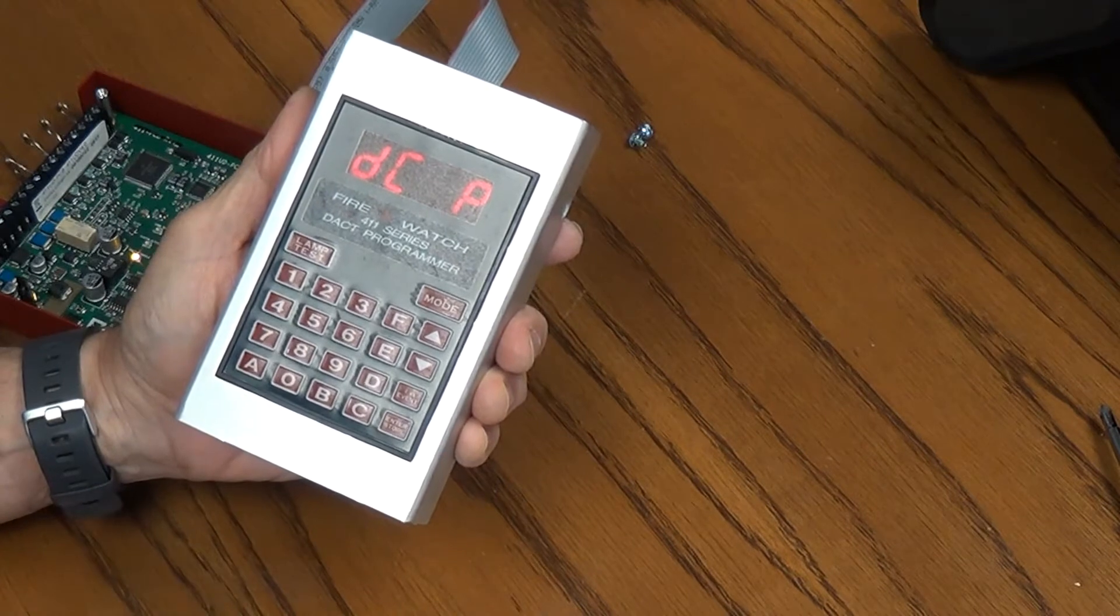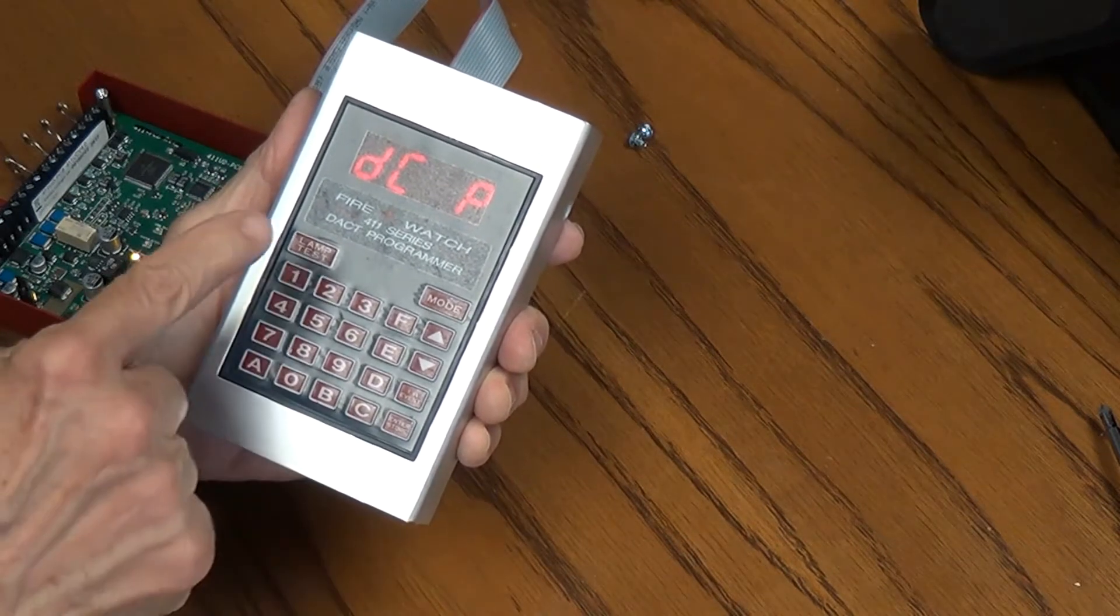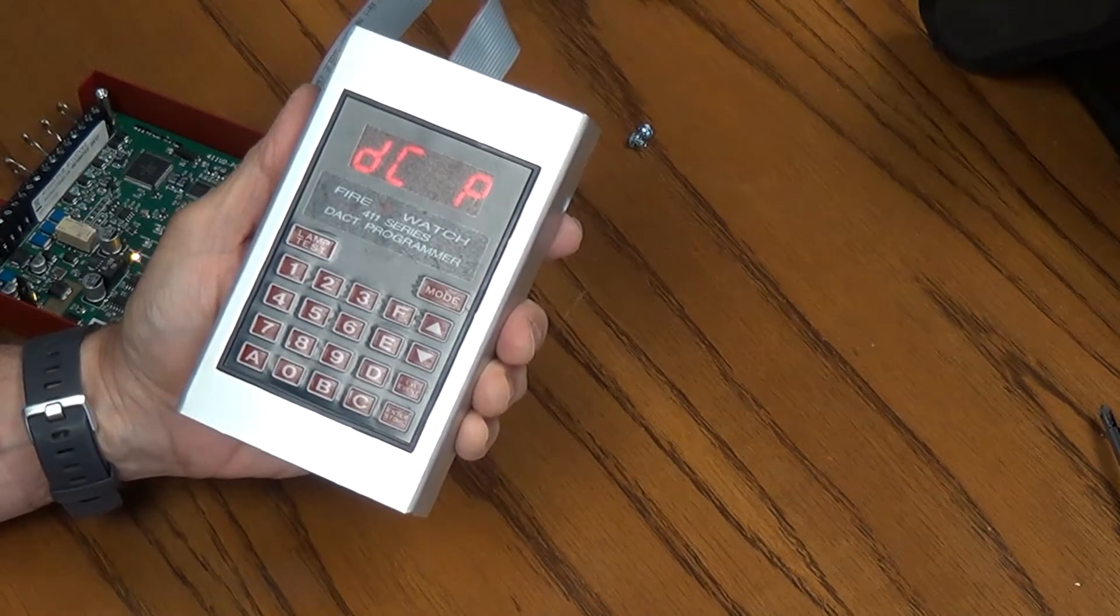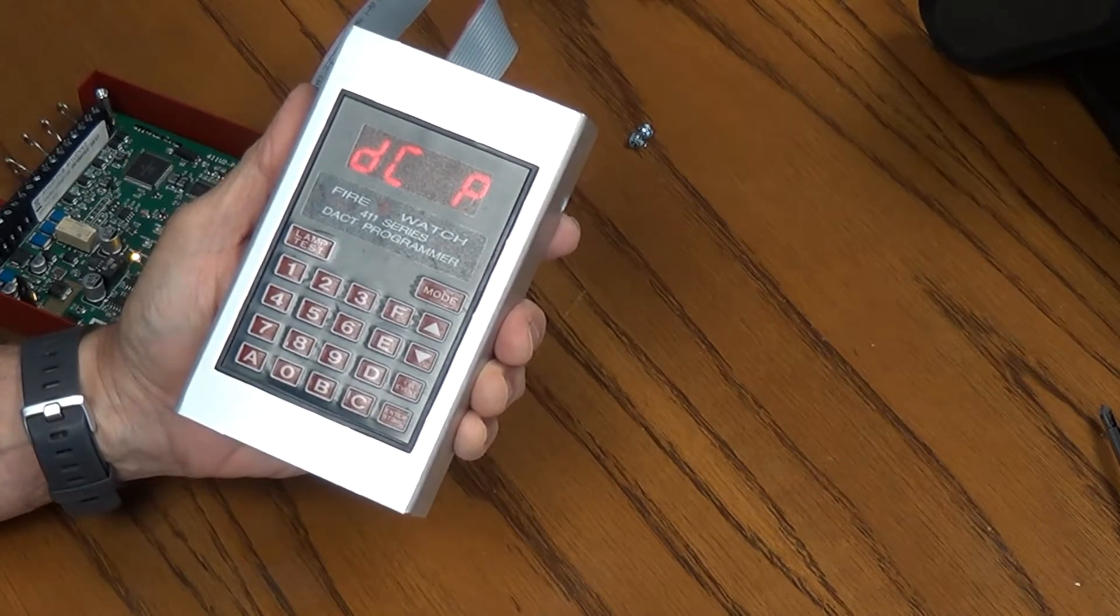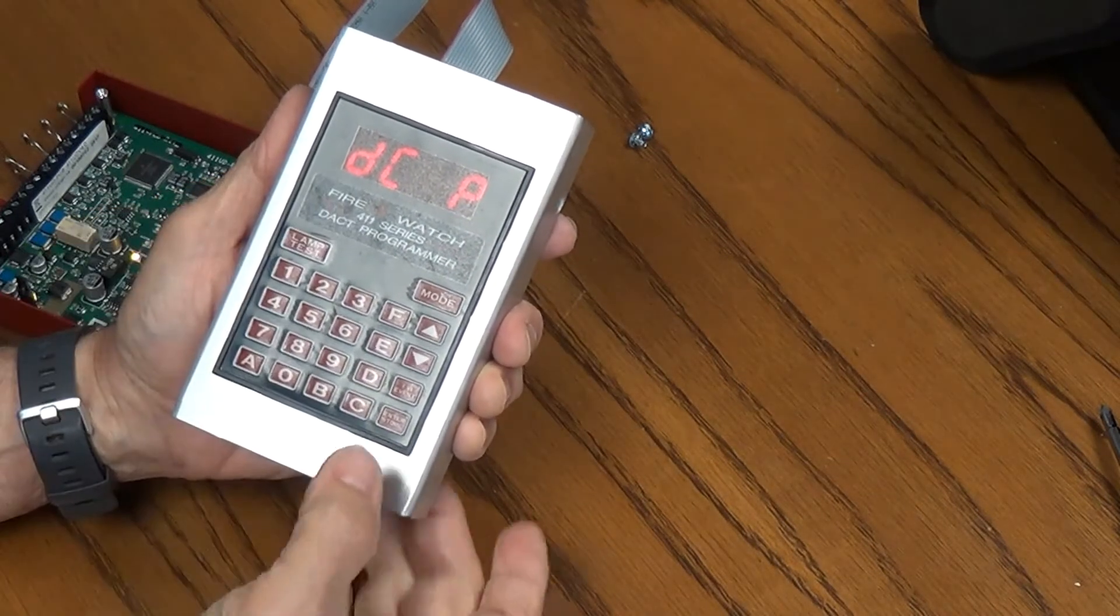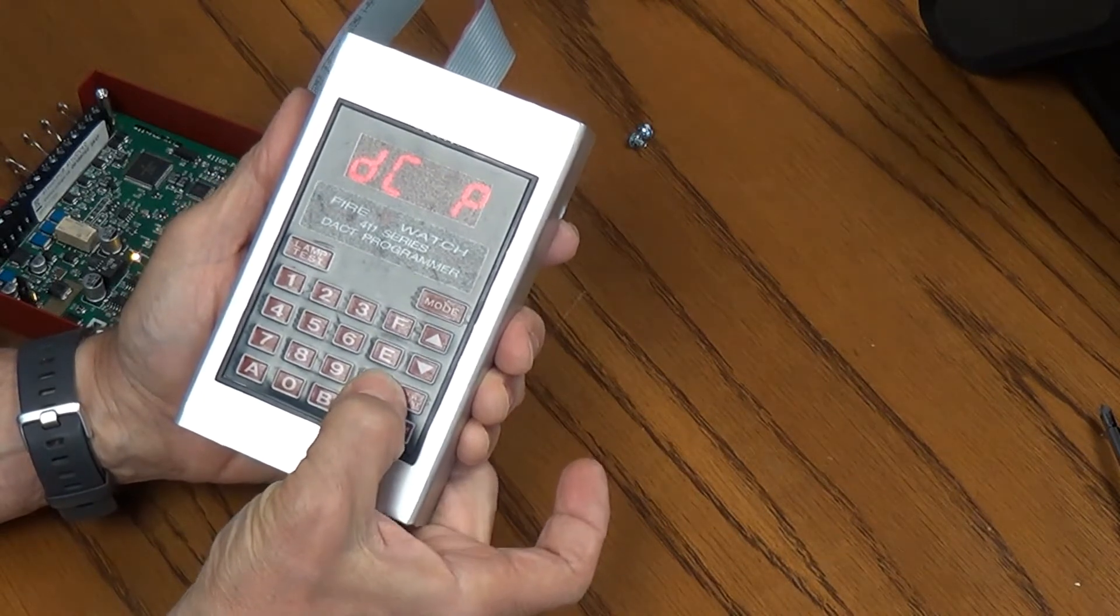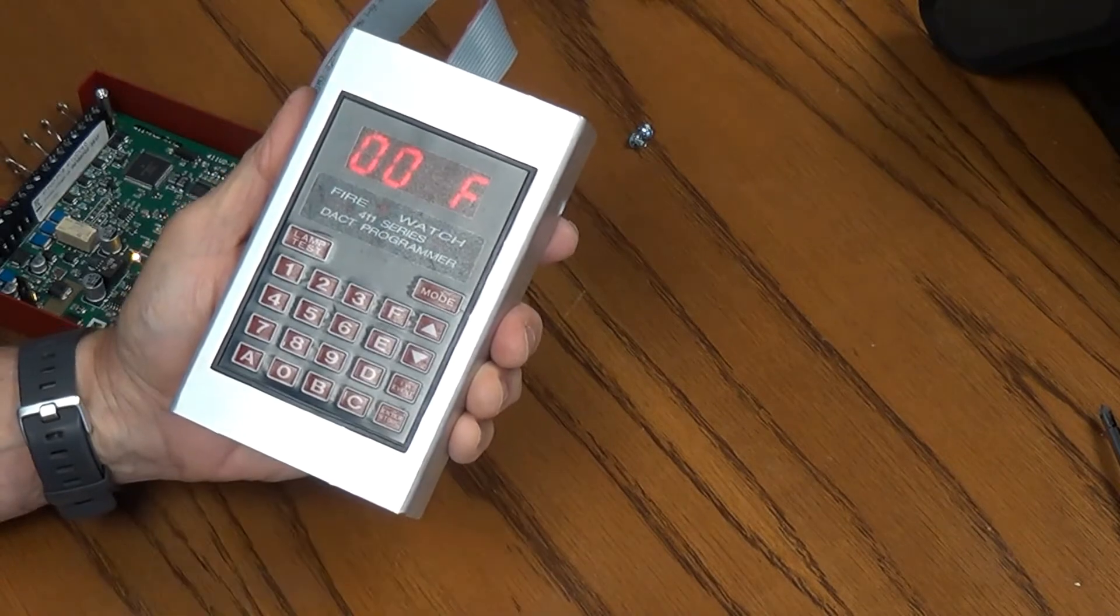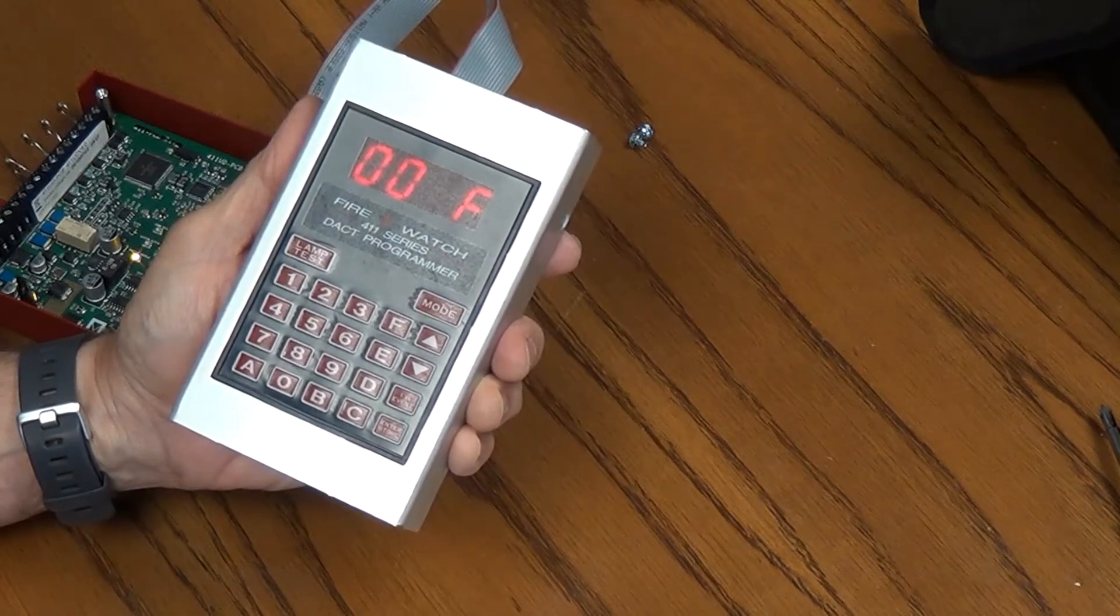It has accepted that code. And now it's saying, do you want to change the password or leave it as the default? We are going to leave it as default. So D is for default. We're going to press D and then press enter. Now we are in program mode, fully in program mode.